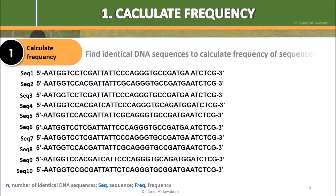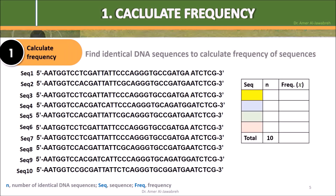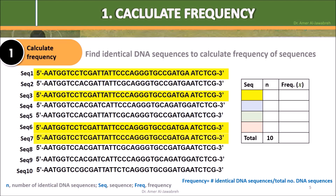Step 1: Calculate frequency — the number of identical DNA sequences over the total number of DNA sequences. Using color code for clarification: sequences 1, 3, 6, and 7 are identical, giving an x of 0.4. Sequences 2, 5, and 8 are identical, with an x of 0.3.